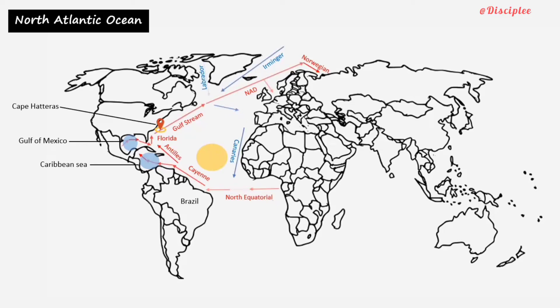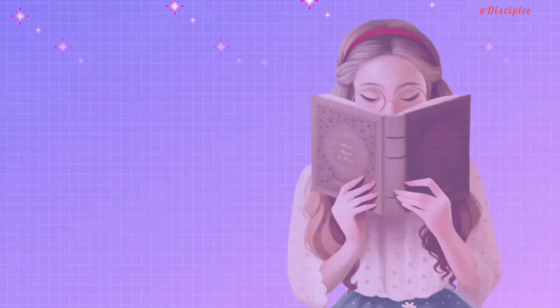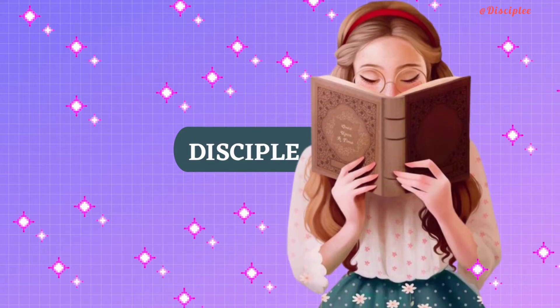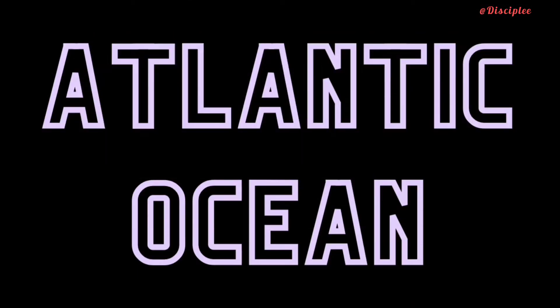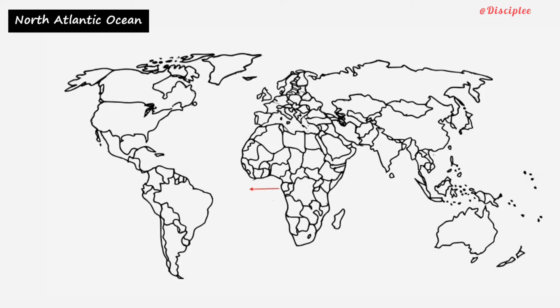Hi everyone, today we will talk about circulation of the Atlantic Ocean — specifically, the ocean currents in the Atlantic Ocean. We shall begin with the north and south equatorial currents at the equator.